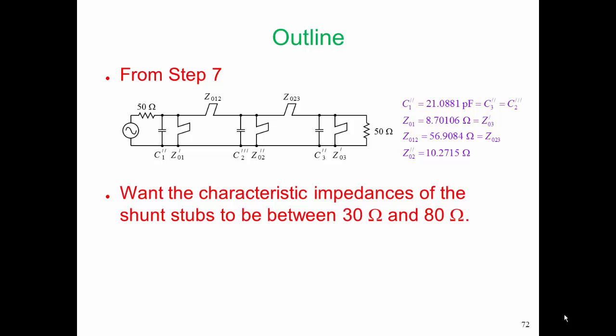We want the characteristic impedances of our shunt stubs to be between 30 ohms and 80 ohms. Now we could realize microstrip lines with characteristic impedances that were maybe 20 ohms and maybe as high as 100 ohms, but we really like them to be around 50 ohms. We're going to have the greatest chance of faithfully reproducing the impedances when they're in that range.